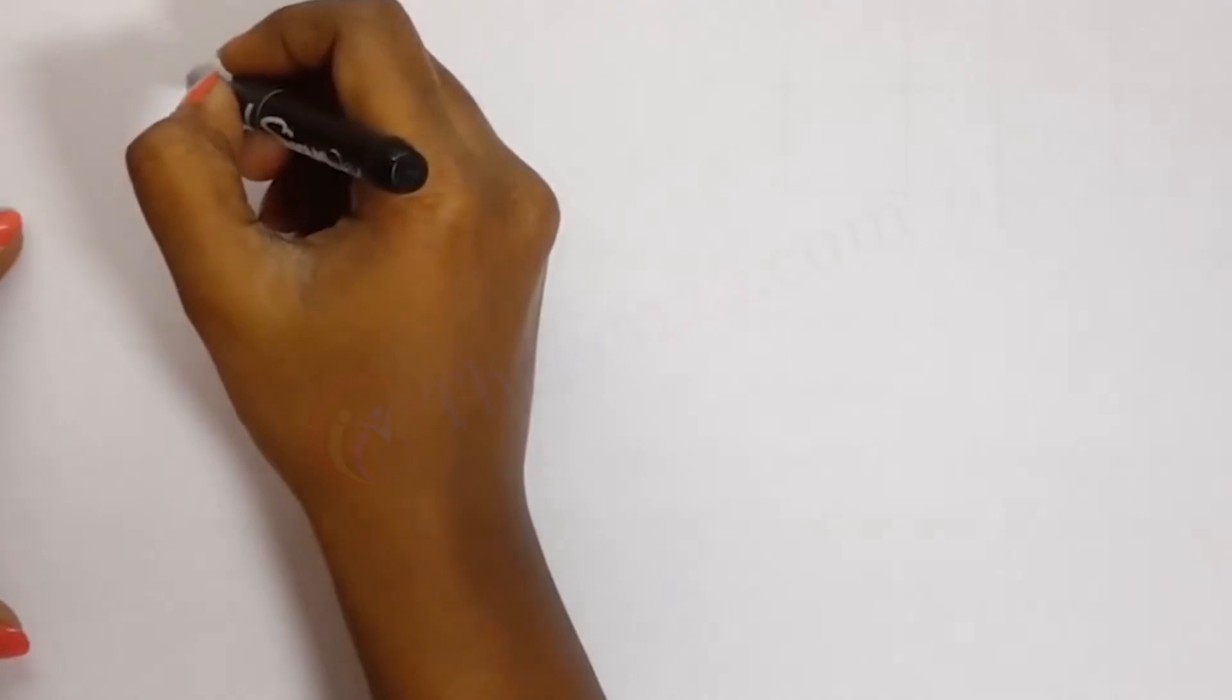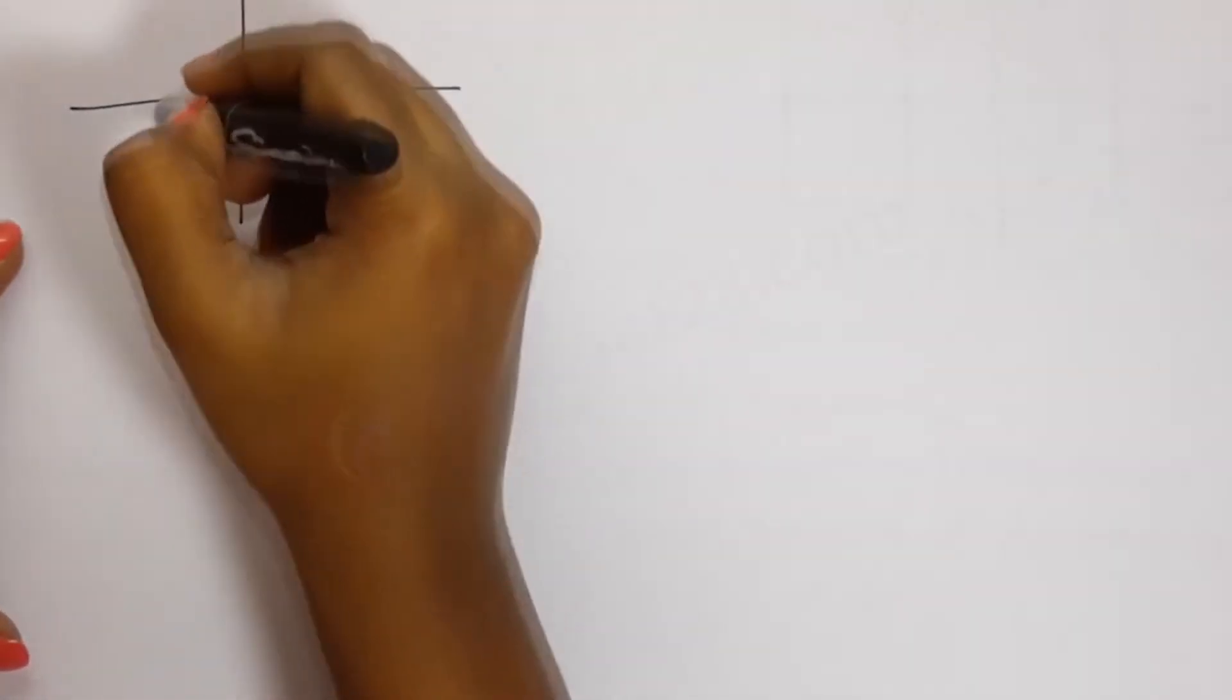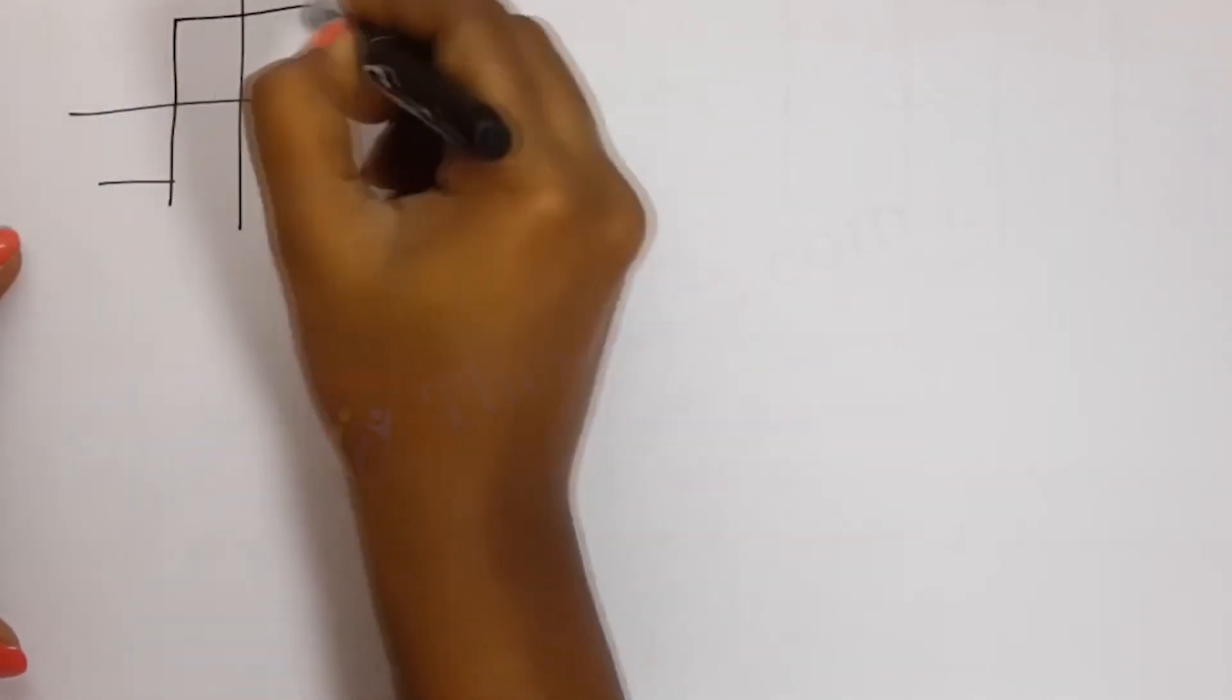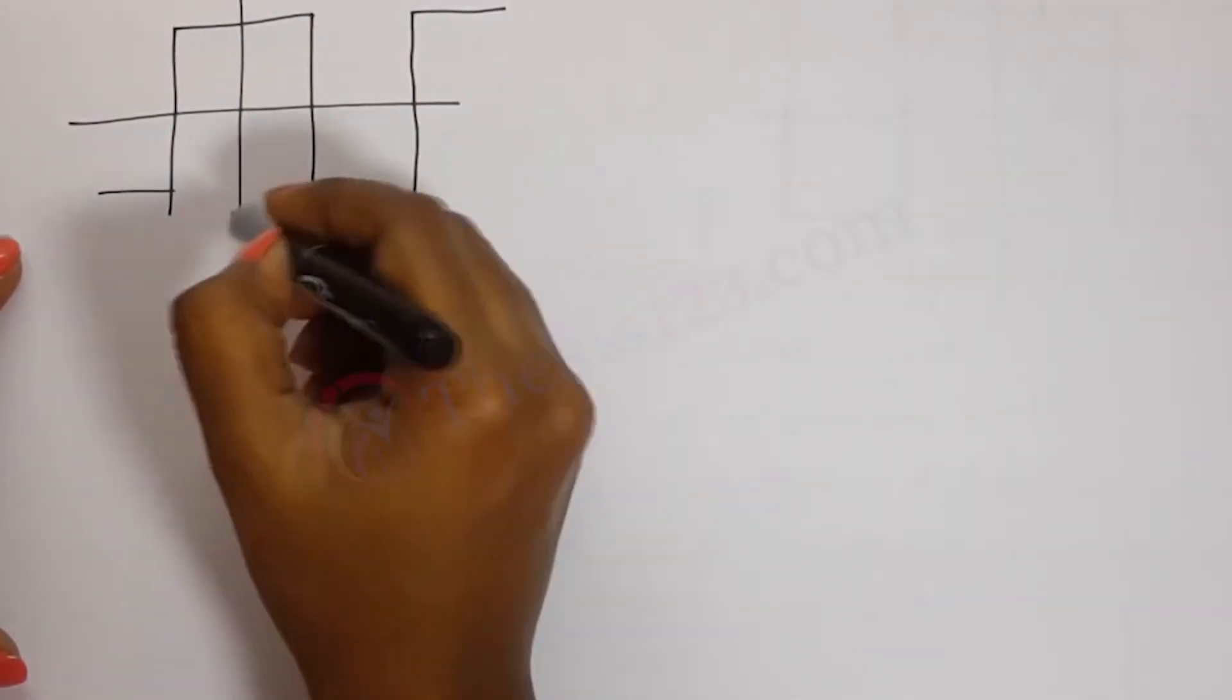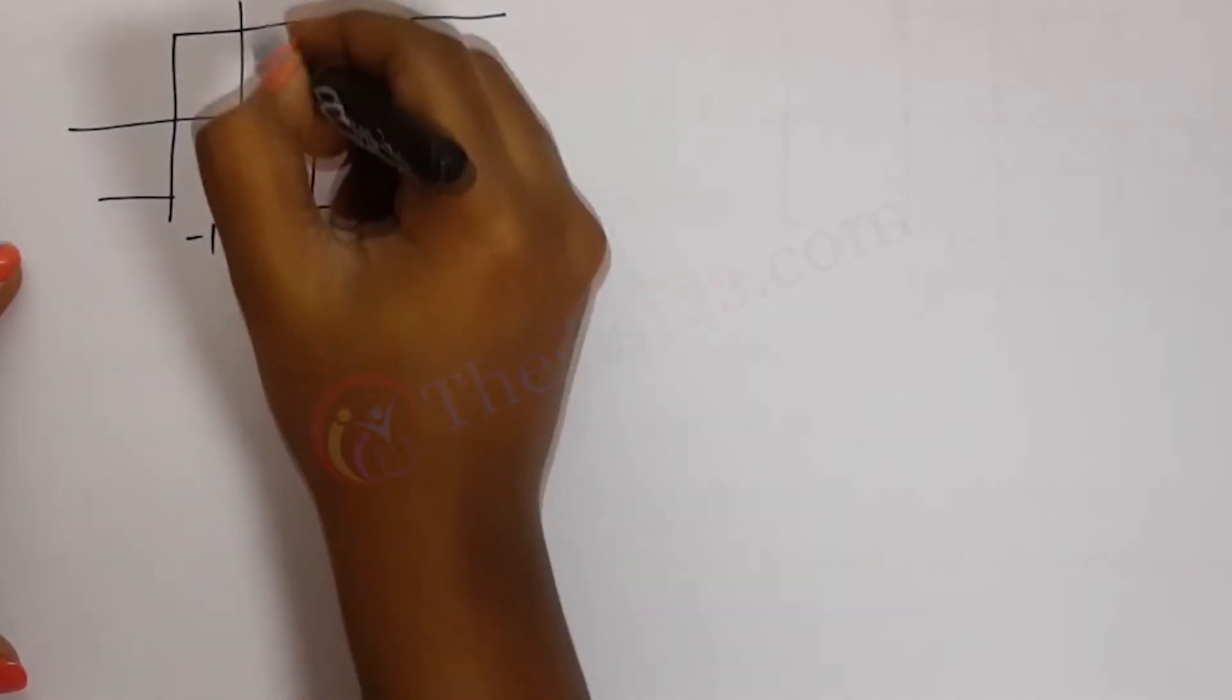So the function, when we draw the wave function of signum of cos t, we get this waveform here like so. Where this is minus 1,